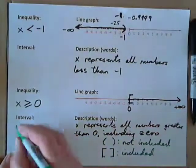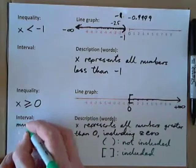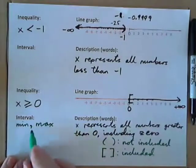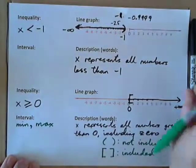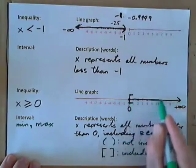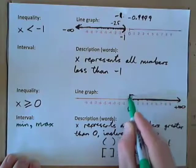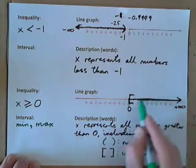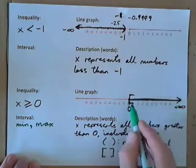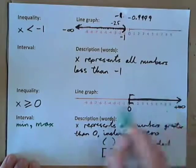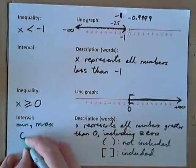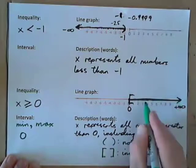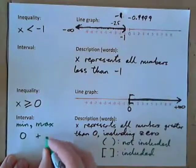An interval is always in this form: min, comma, max — the minimum number in the set, comma, and then the maximum number in the set. If we look at this example, the line graph is usually the easiest thing to figure out, so always work on that first. This is showing all numbers from 0 to positive infinity and all the numbers in between. What is the minimum number in this set? The smallest number we have is 0. What's the largest number? This set goes all the way to positive infinity, so that's the maximum.